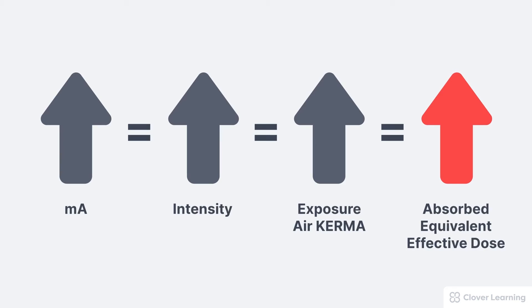Fortunately, most of these measurements are influenced in the same way by the same variables. For example, if we increase the mA and nothing else has changed, this is going to increase the beam intensity, which will then increase the exposure as well as the air kerma, and that's going to result in an increase in the absorbed dose, the equivalent dose, and the effective dose.